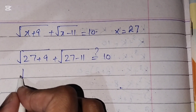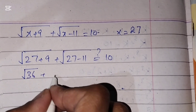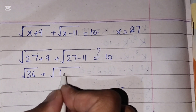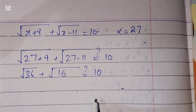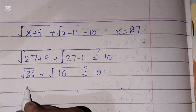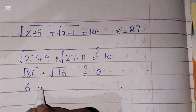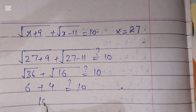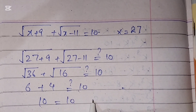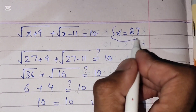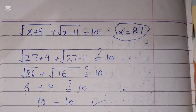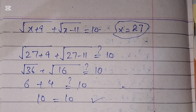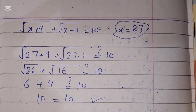27 + 9 is 36, and 27 - 11 is 16. The square root of 36 is 6, and the square root of 16 is 4. 6 + 4 = 10, and 10 equals 10 — verified! The value of x = 27 is correct. I hope you understand this video. Please like and subscribe to my channel, and do not forget to press the bell icon. Thank you for watching!